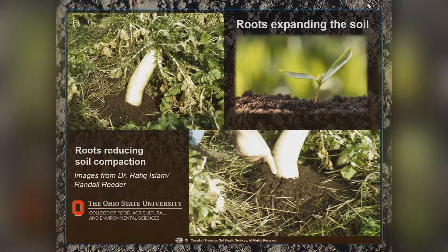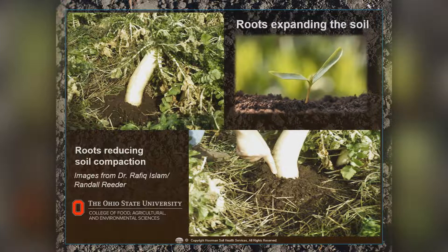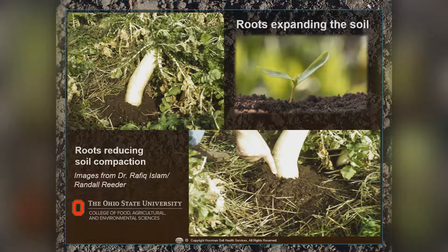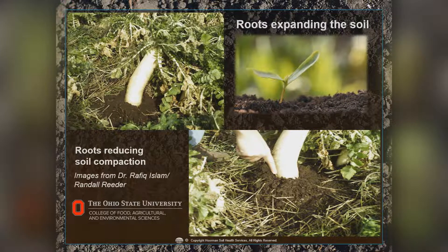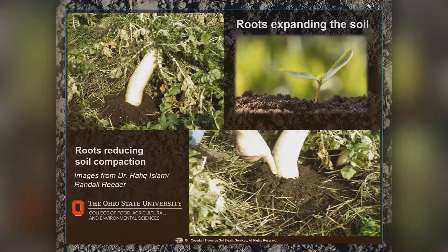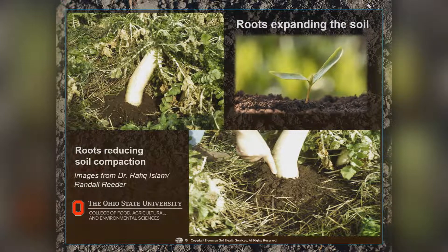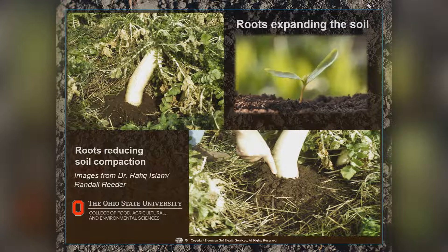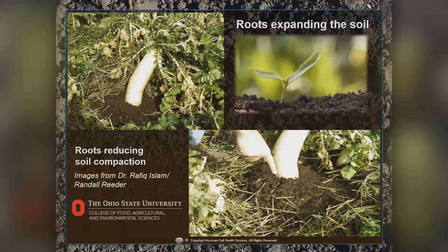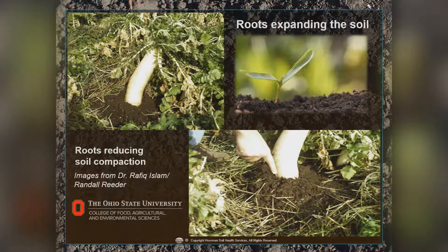Roots, believe it or not, actually compact the soil locally but also uncompact it. A large radish root, as it goes into the soil, pushes down and out, and because it's physically lifting the soil, it's adding pore space. So roots penetrate the soil and actually lift it up, allowing more pore space to occur.